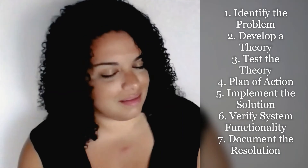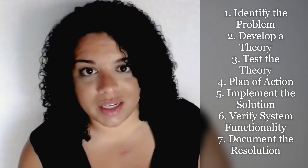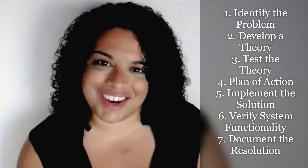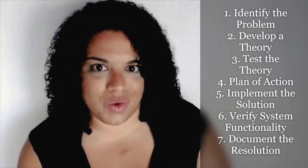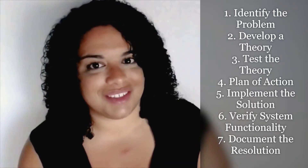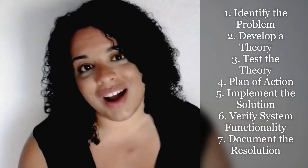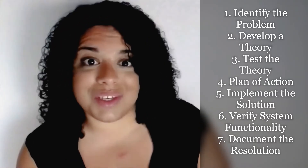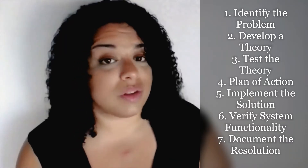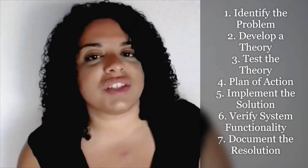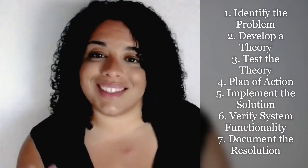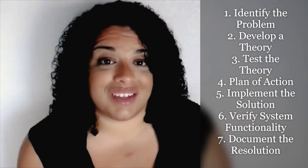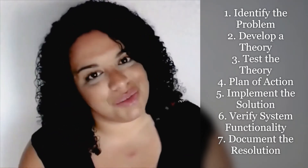Let's check out all seven steps. First, you identify the problem. Then develop a theory. Once you have a theory, you go to number three, which is to test that theory. Once you have all that tested out, you move on to step four — creating a plan of action. Now that you have a plan, you move into step five and actually implement the plan — implement the solution itself. Once the solution is implemented, move on to step six, which is to verify your system functionality. Did your resolution actually work? And if it did, shoot straight into number seven and document your findings.